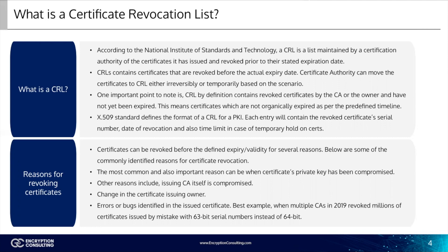What are some of the most common reasons a certificate can be revoked before its expiration? Certificates can be revoked before the defined expiration or validity for several reasons. The most common and most important reason is when a certificate's private key has been compromised. Other reasons include the issuing CA itself being compromised, a change in the certificate issuing owner, or errors and bugs identified in the issued certificate. A best example of this is when multiple CAs in 2019 revoked millions of certificates issued by mistake with a 63-bit serial number for each instead of 64.